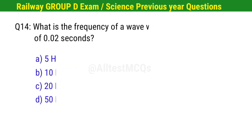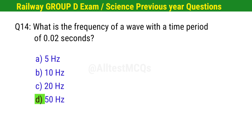Question No. 14. What is the frequency of a wave with a time period of 0.02 seconds? Right option is D. 50 Hertz.